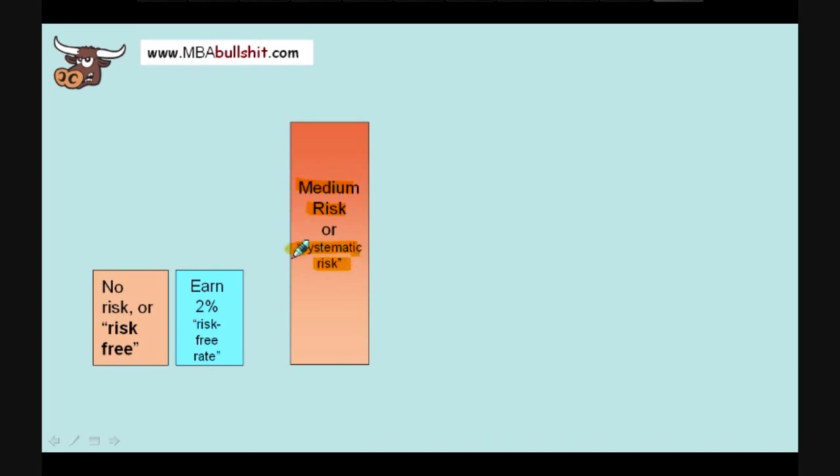This is just MBA bullshit and for now, let's just use the word medium risk and we can get back to the systematic risk later. It's called systematic risk because it represents the risk of a certain system which is usually used such as the United States stock market. But if you don't understand what I just said, don't worry about it. Just forget it for now. For now, we'll just say it's medium risk.